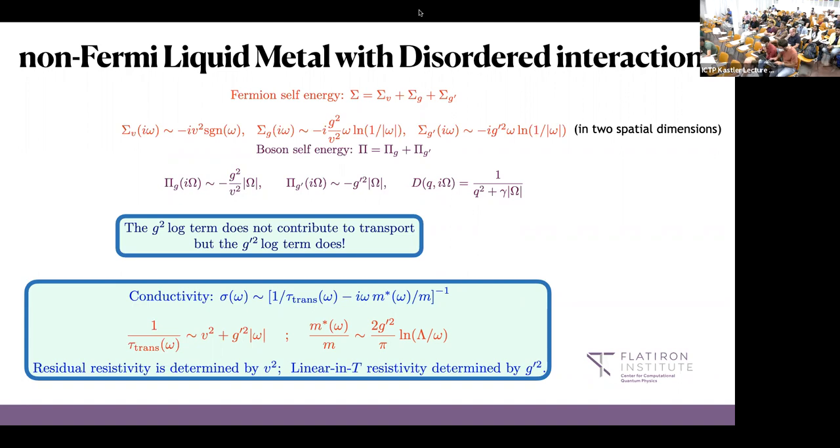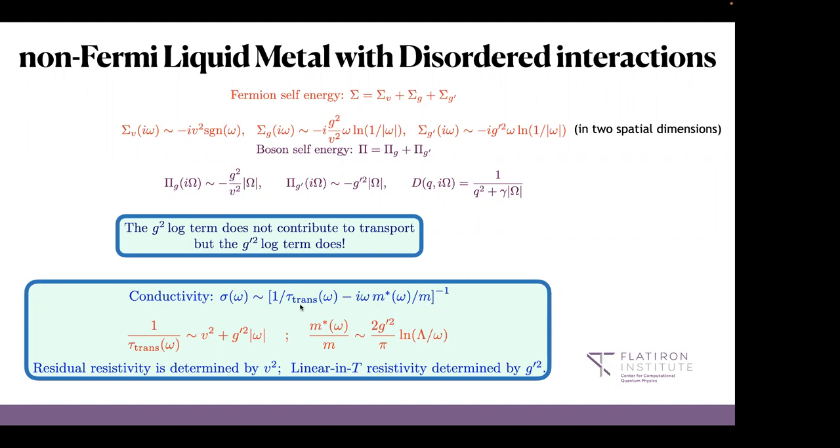I see there is a question in the chat from Piers Coleman who is asking if the disorder in g prime is also giving a residual scattering rate. Yeah, not within this Eliashberg calculation. This Eliashberg calculation can also be formally justified by a large N SYK type construction which I haven't invoked just to keep things simple, but it's in the papers. But within the scope of this calculation it doesn't generate a residual piece, but if you are not using that large N construction, there will be higher order diagrams which generate some residual contribution I think.